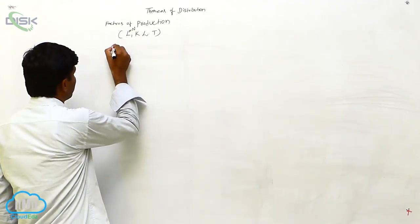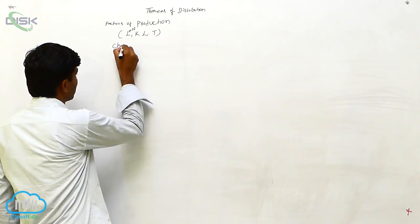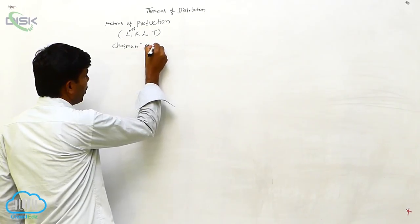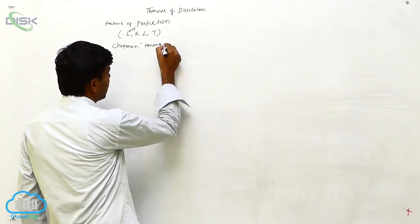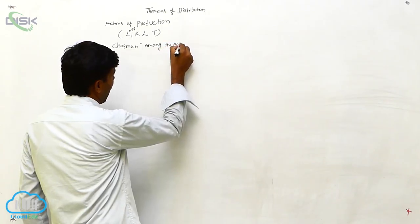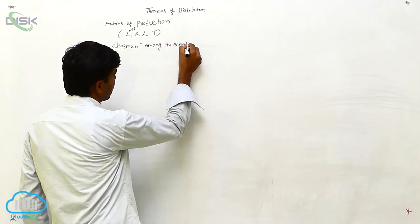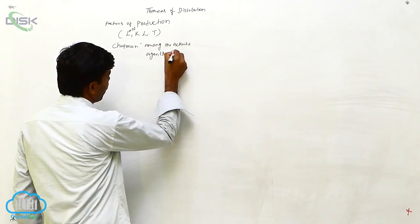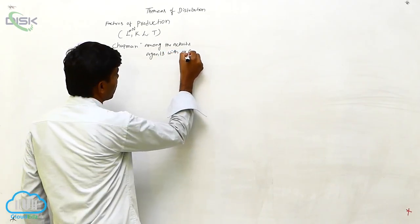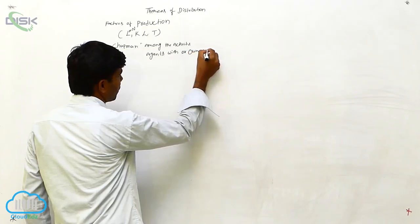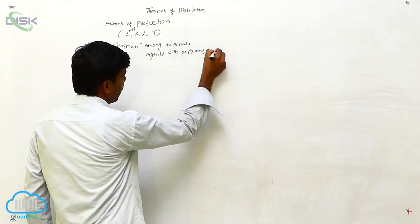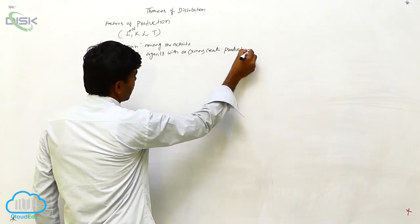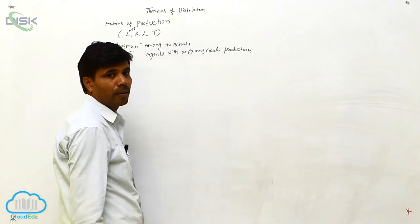Chapman gives the definition that distribution is among the activities of these agents or owners who are active in production. That is the definition given by Chapman.